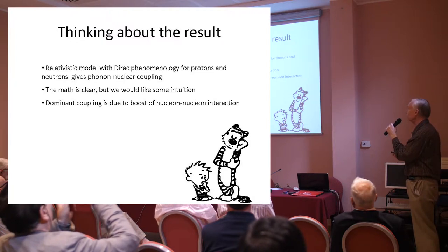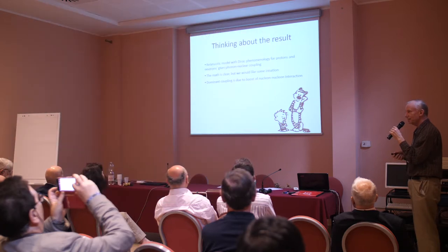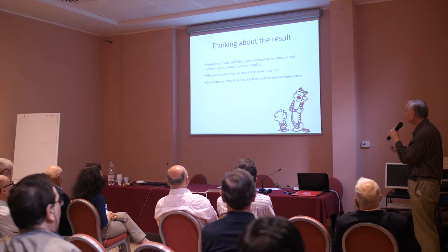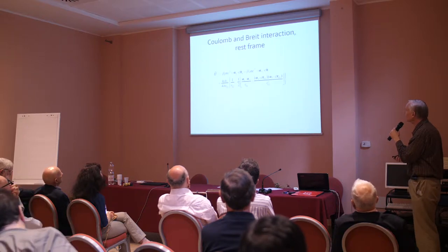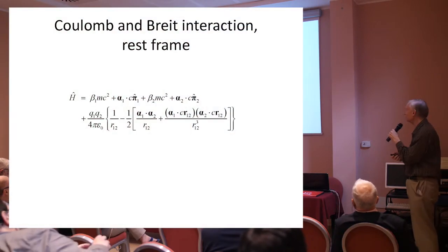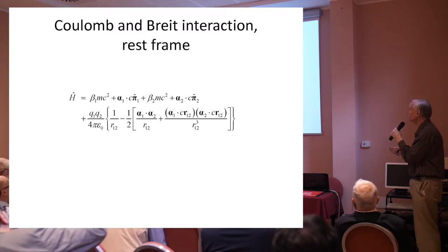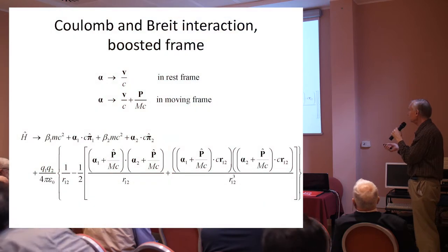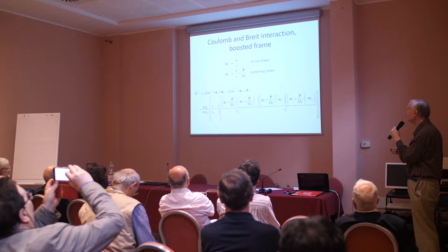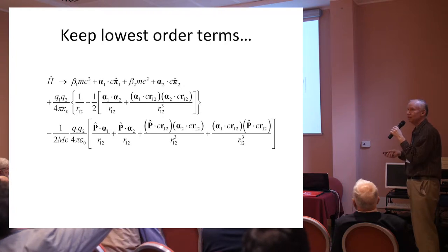This comes out directly from Dirac phenomenology for protons and neutrons. The basic effect was actually discovered by Breit back in 1937 or so. The dominant couplings come from the boost of the nucleon-nucleon interaction. For intuition: if we consider the Coulomb plus Breit interaction in the rest frame for a two-body problem, and then boost it, we get a complicated mess. If we separate out the complicated mess, we have what we had in the rest frame plus a correction due to the boost.